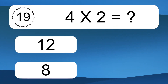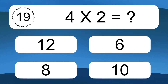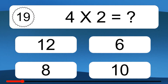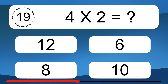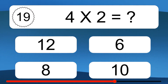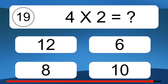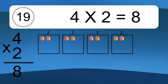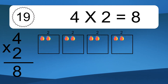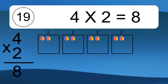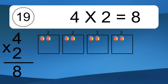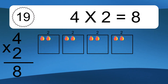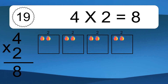4 times 2 equals what? 8. We have 4 boxes and each box has 2 colorful balls inside. If you count all the balls in all the boxes together, you will have 4 times 2 balls. This equals 8 balls.